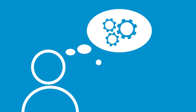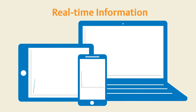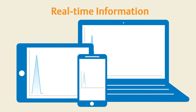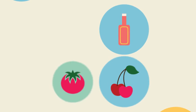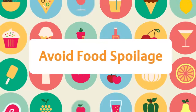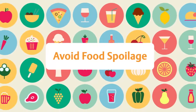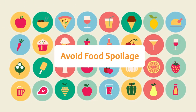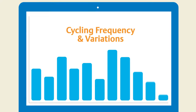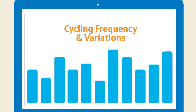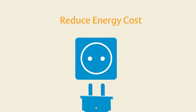Imagine that there is a tool where you could analyse system behaviour, such as system downtimes, so you can avoid food spoilage and cut down on maintenance cost and reduce maintenance time. Imagine there is a tool where you could monitor cycling frequency and variations, so you can prevent energy waste and reduce energy cost.